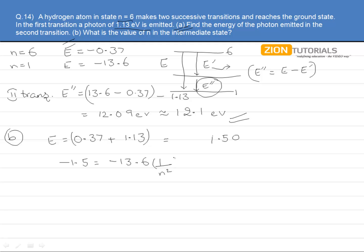I can say that minus 1.5 equals to minus 13.6 z square which is 1, n square which we need to find out, and from here we can calculate n to be 3.03, which implies that n is basically 3. So the transition is happening with the orbit number 3 because it is coming from 6 to 3 and then going from 3 to 1.